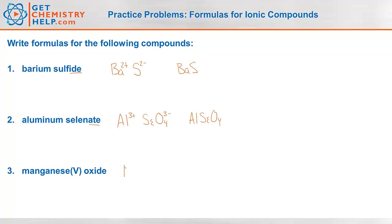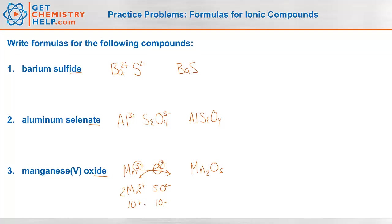Manganese(5): manganese is Mn, and the 5 tells me it's 5 positive. Oxide: -ide normally means the anion is just a single non-metal, not a polyatomic. So oxide comes from oxygen, which is 2 away from the noble gases, so it's 2 negative. How do we balance a 5 positive and a 2 negative? We use our crossover rule — put the 5 over there as a subscript and the 2 here as a subscript — and that gives us Mn2O5. Let's check: 2 manganese at 5+ gives 10 positive; 5 oxides at 2- gives 10 negative. 10 positive neutralizes 10 negative.